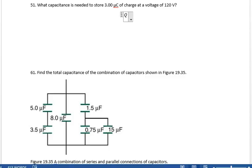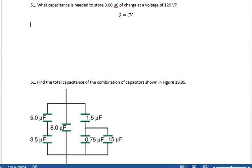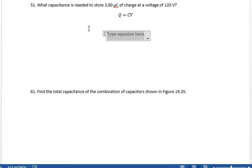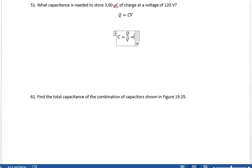We know Q equals CV, and we're looking for the capacitance, so C equals Q over V. That gives us 3 microcoulombs divided by 120 volts.